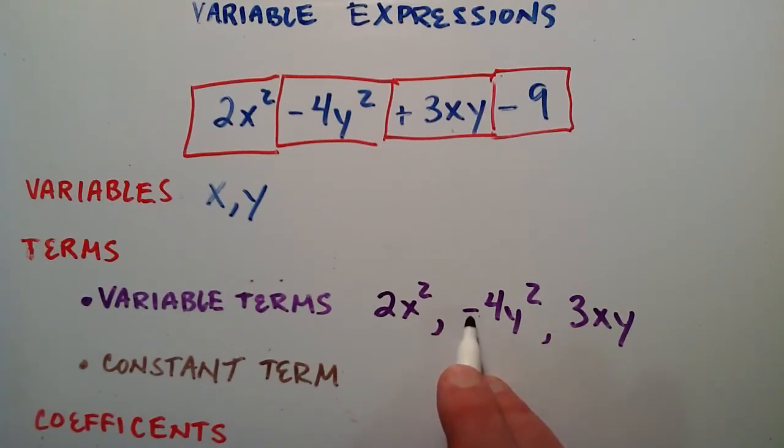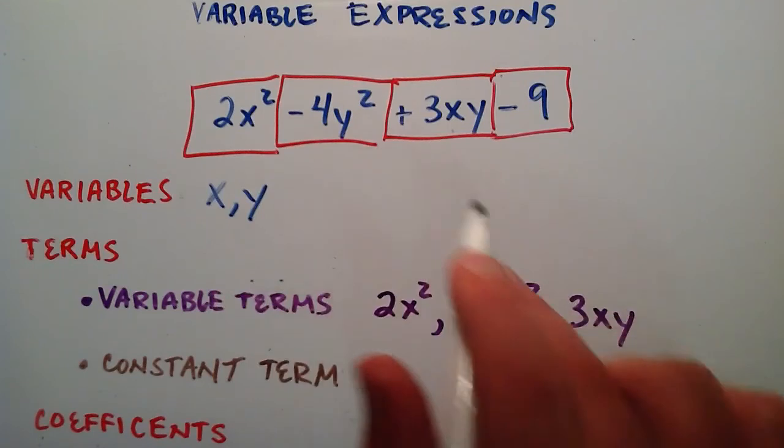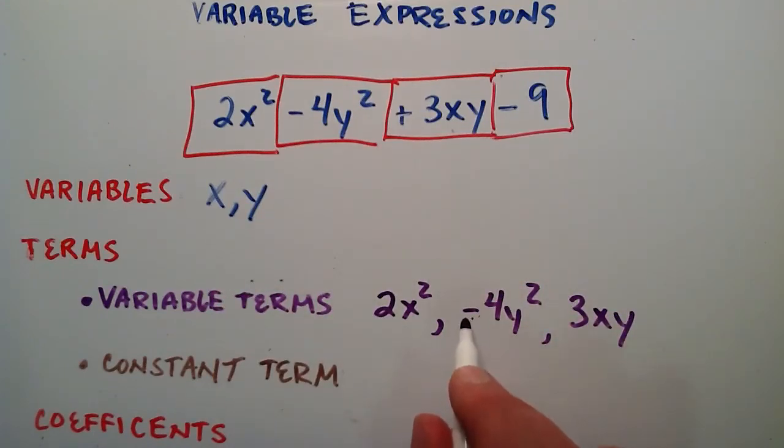If you have a negative term or subtraction of a term, you want to make sure that you include that negative sign as part of your term. It's really important to know that the negative sign gets attached to your term if you have one. Those are our three variable terms because they include variables.